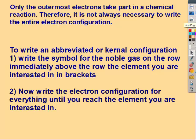Only the outermost electrons take part in a chemical reaction, therefore it's not always necessary to write the entire electron configuration. So to write an abbreviated or kernel configuration, or shorthand configuration, first you write the symbol for the noble gas on the row immediately above the row of the element you're interested in, in brackets.